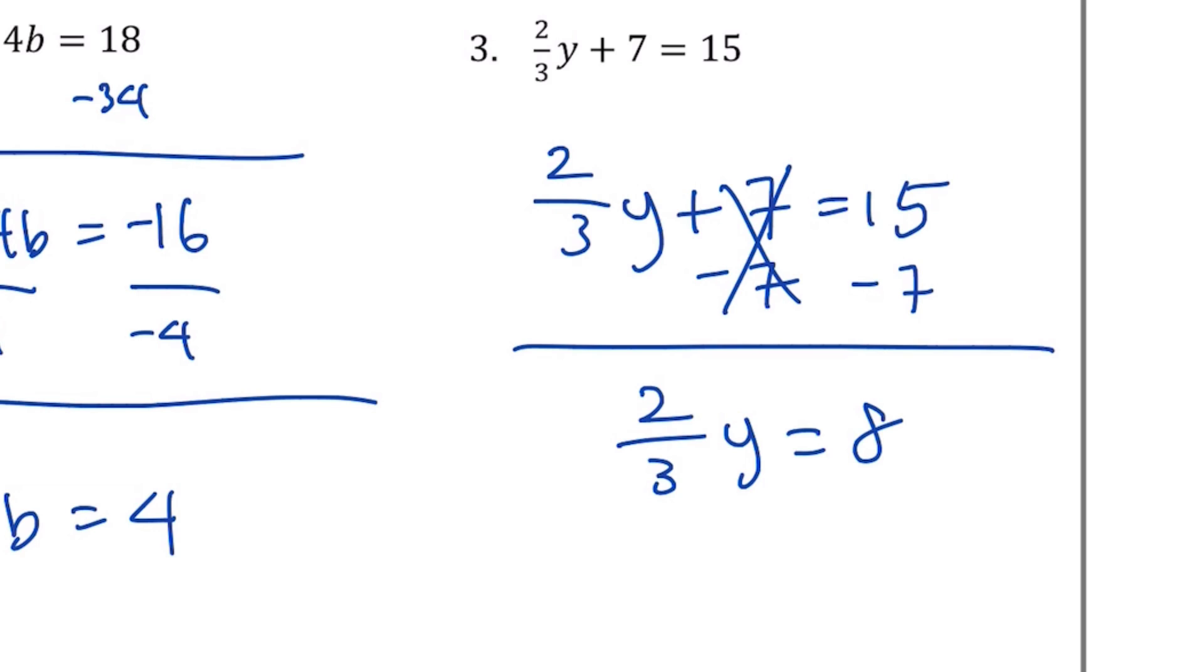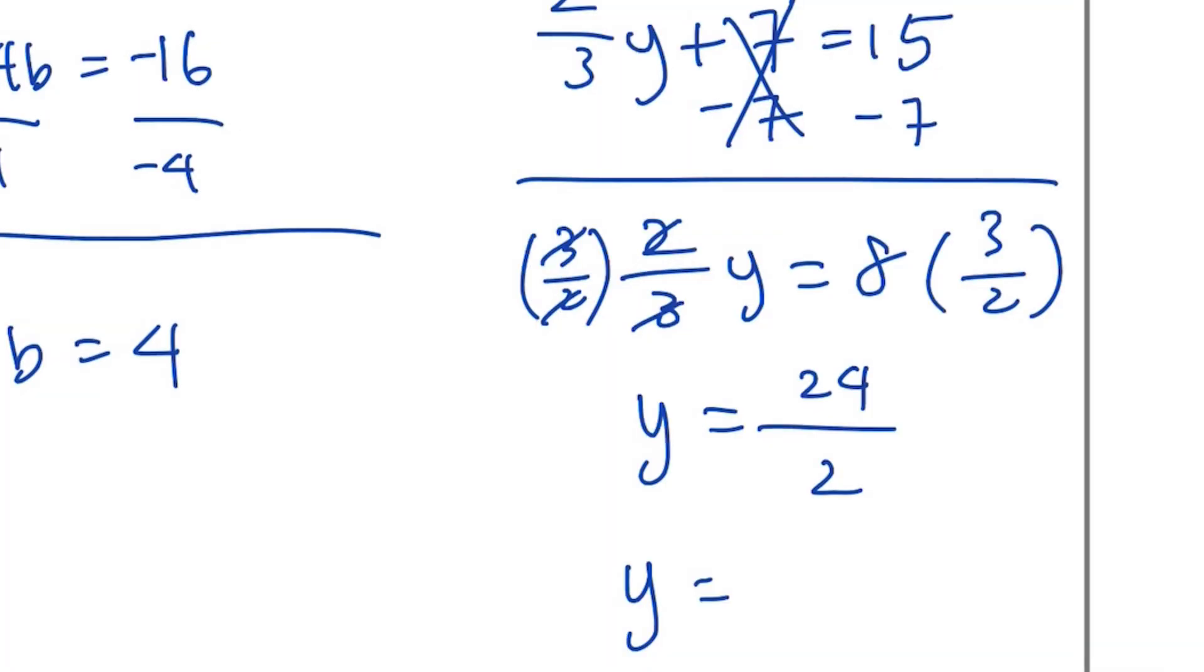I'm going to multiply here because that way when you multiply by the reciprocal, that all cancels out to 1. And here I have 8 times 3, which is 24, and then the denominator is 2. If we further simplify that, we get y equals 12.